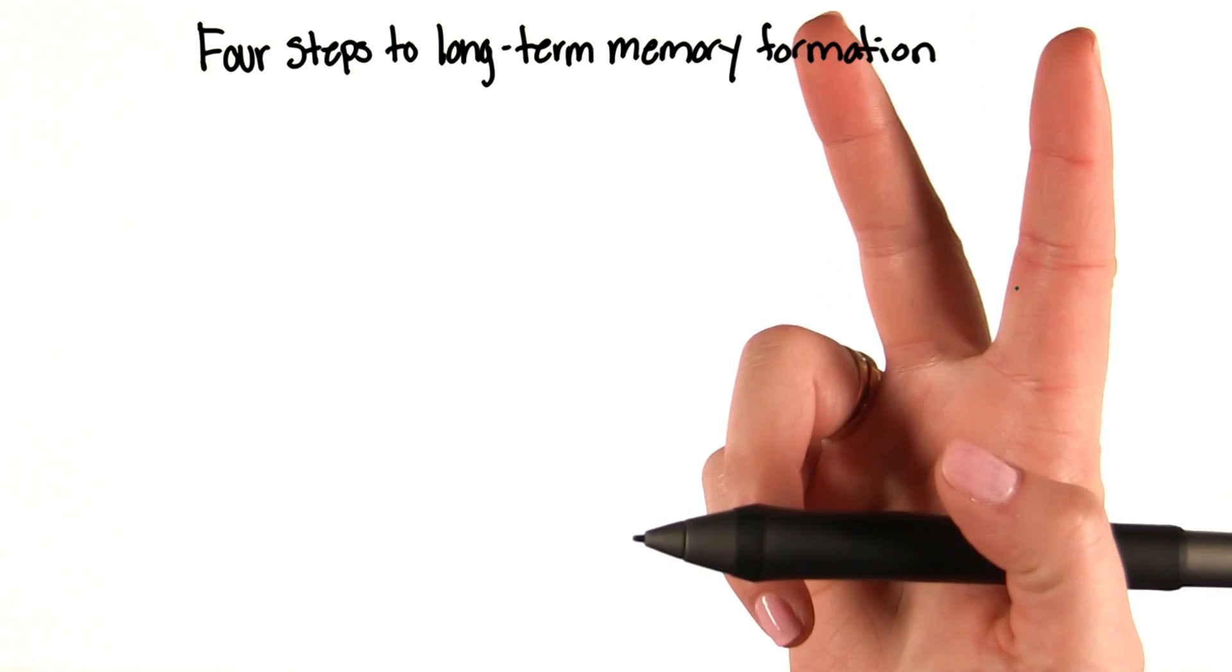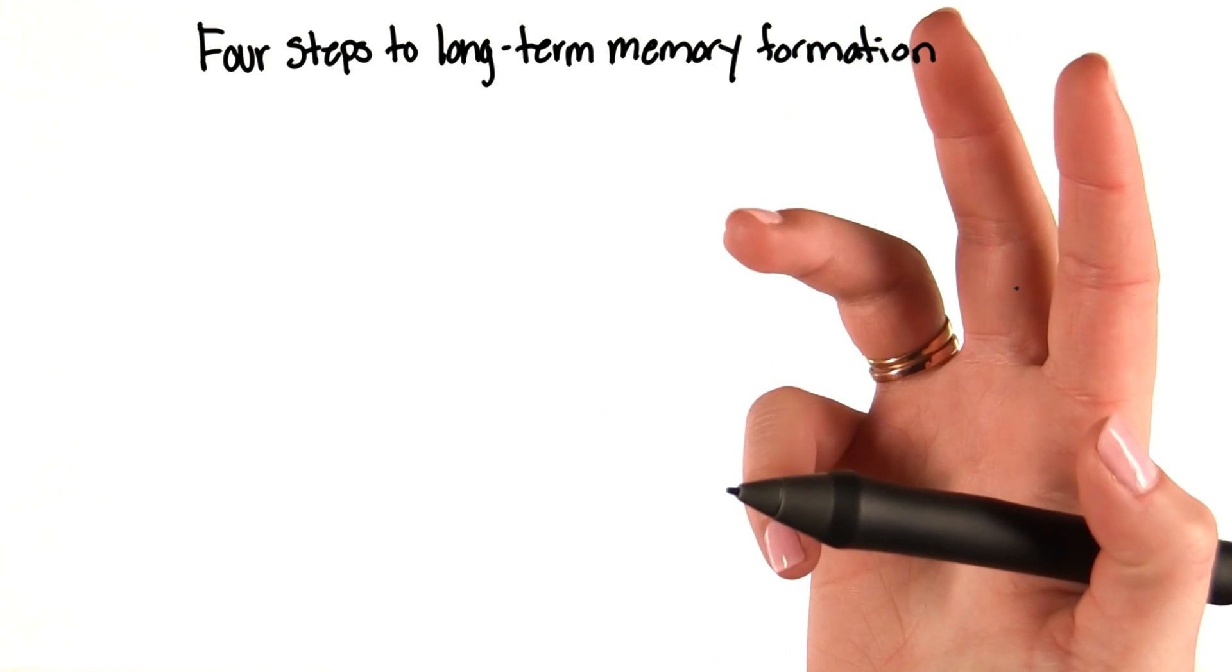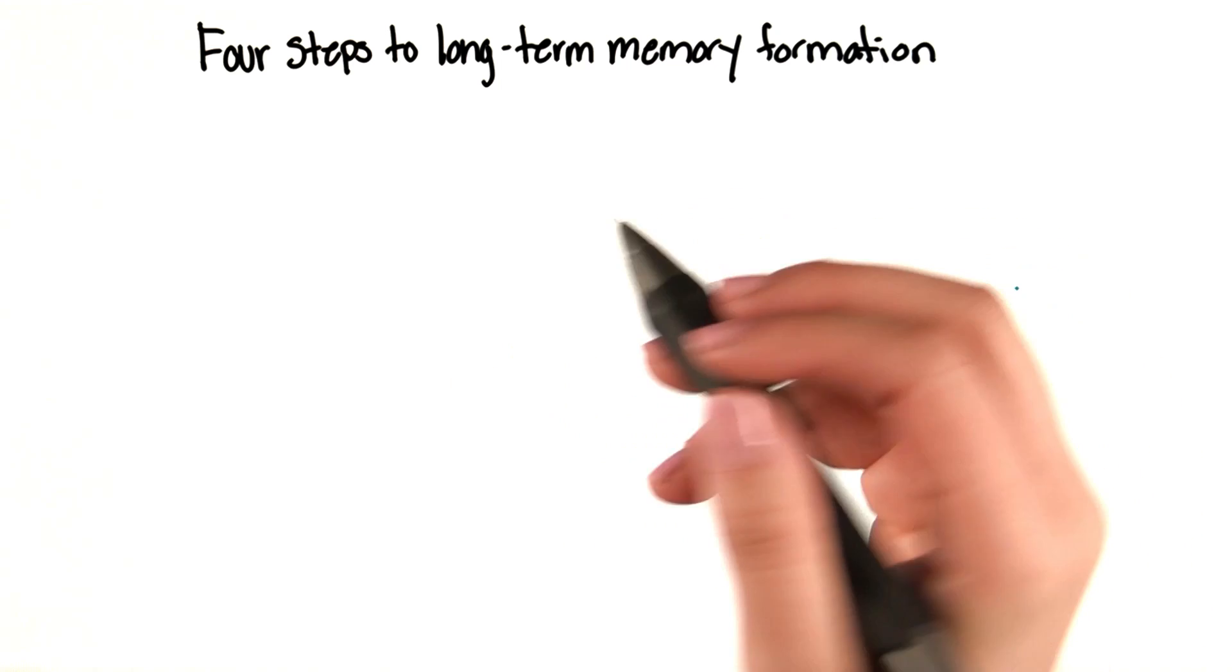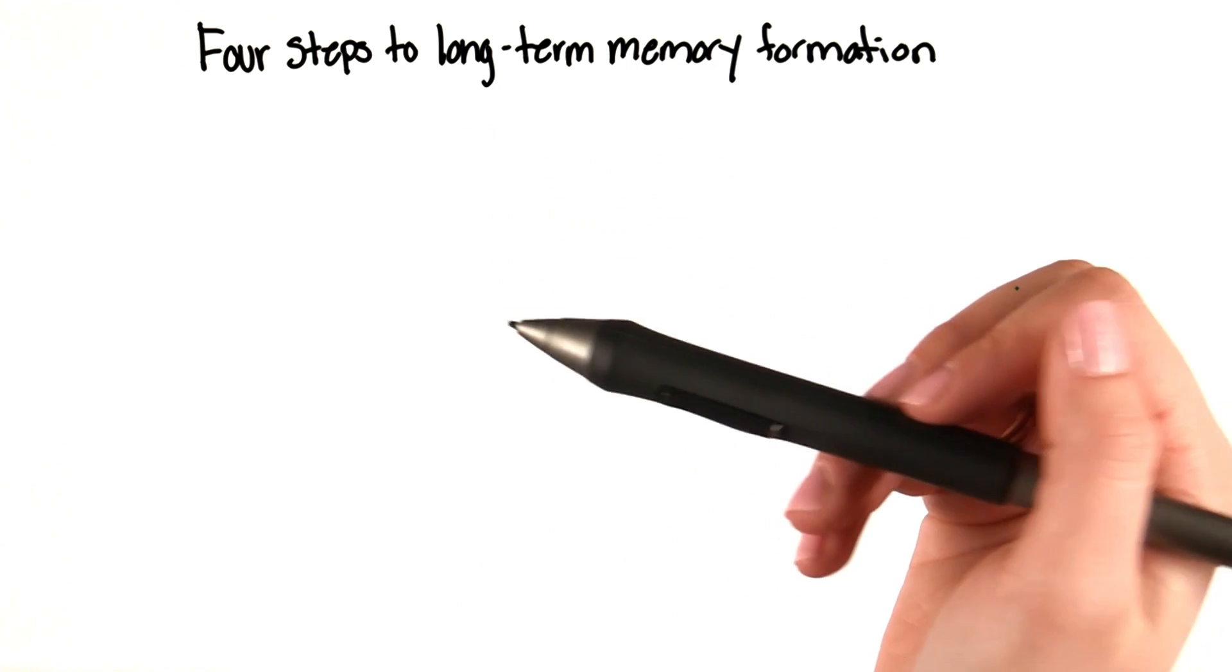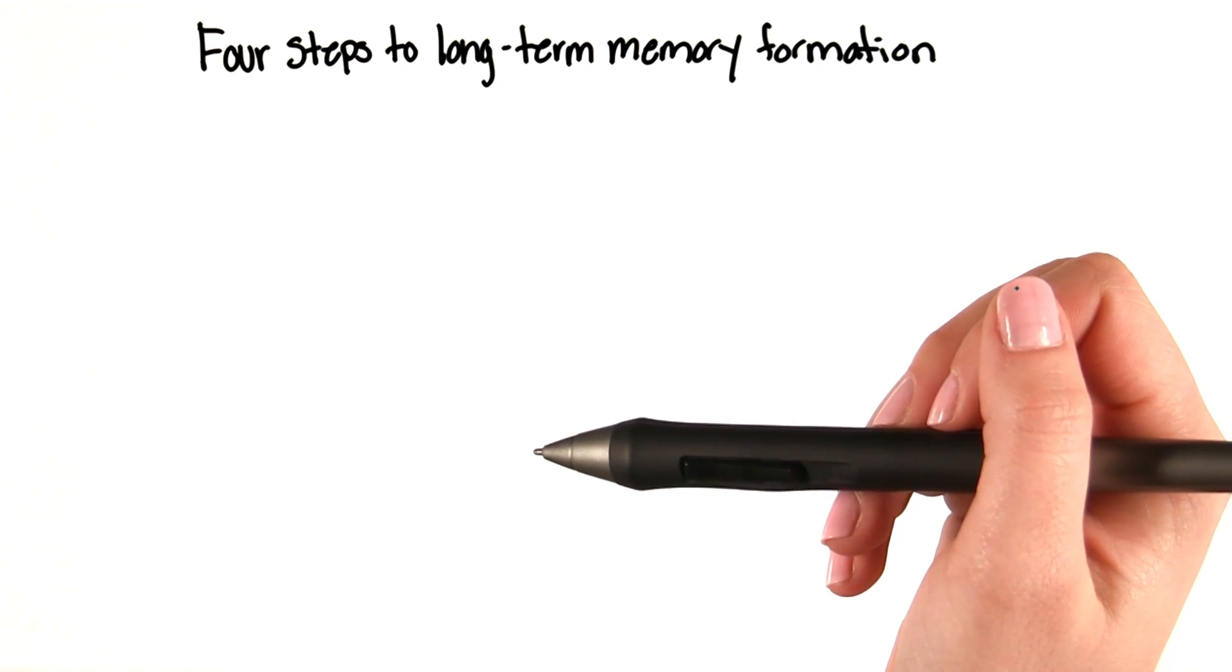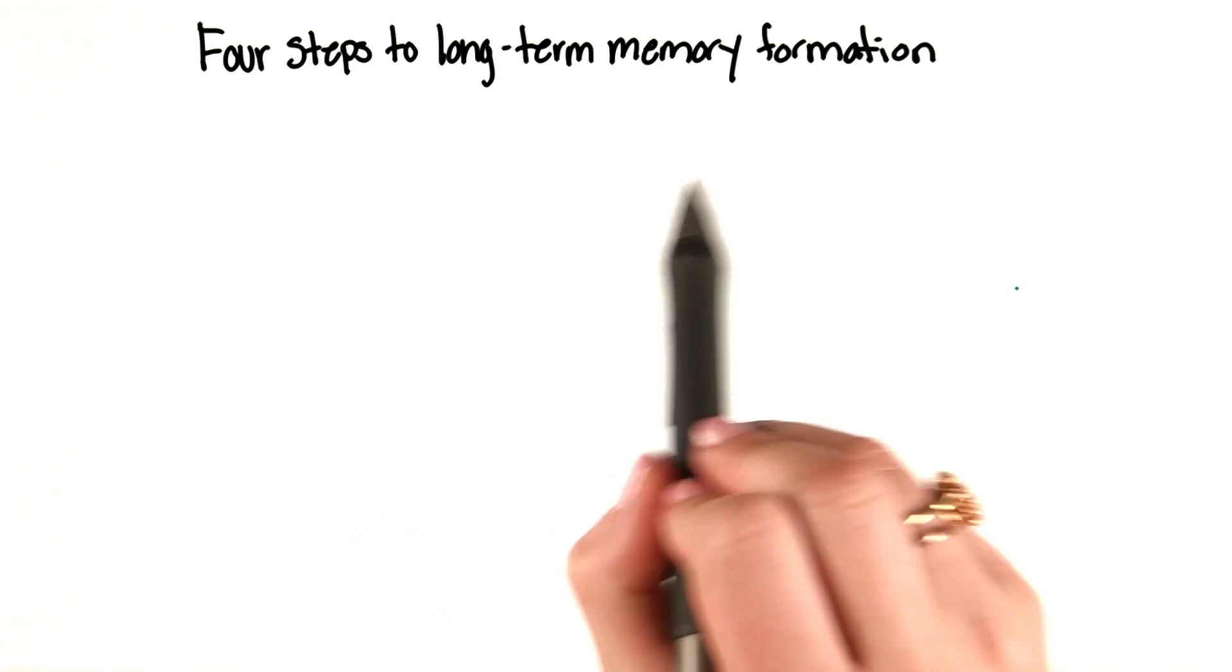We've discussed sensory memory, working memory, and long-term memory, such as episodic or semantic memory. But how do we get information to our long-term memory? Well, there are four steps to long-term memory formation.